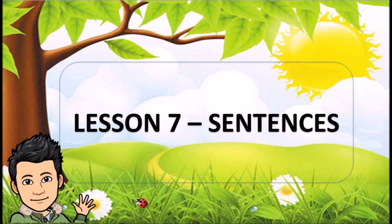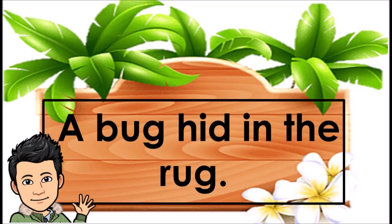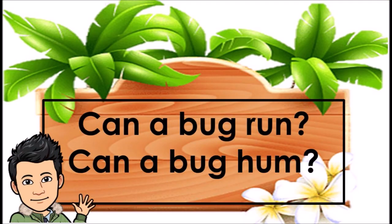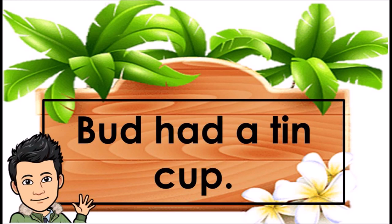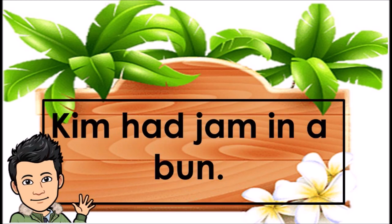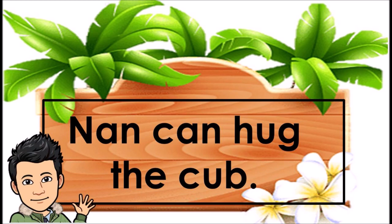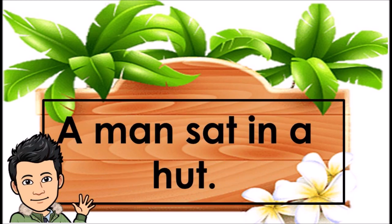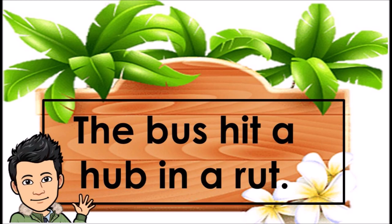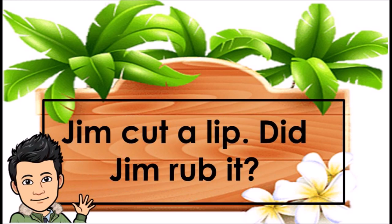Lesson 7. Sentences: A bug hid in the rug. Can a bug run? Can a bug hum? Bud had a tin cup. Kim had jam in a bun. Nan can hug the cub. A man sat in a hut. The bus hit a hub in a rut. Jim cut a lip. Did Jim rub it?